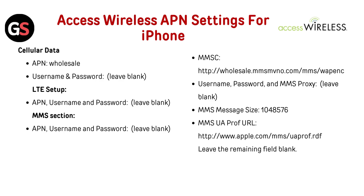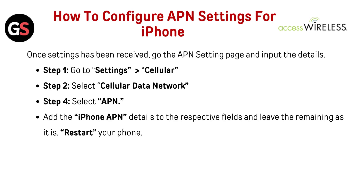Leave the remaining fields blank. How to configure APN settings for iPhone: Once the setting has been received, go to the APN settings page and input the details. Step 1: Go to Settings, then Cellular. Step 2: Select Cellular Data Network. Step 3: Select APN. Add the iPhone APN details to the respective fields and leave the remaining as they are.